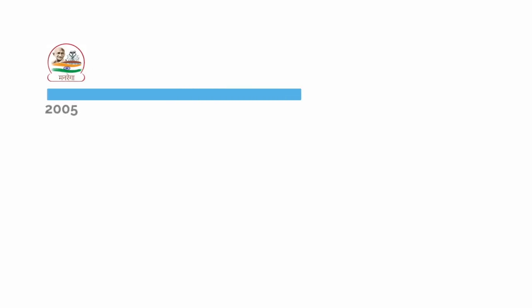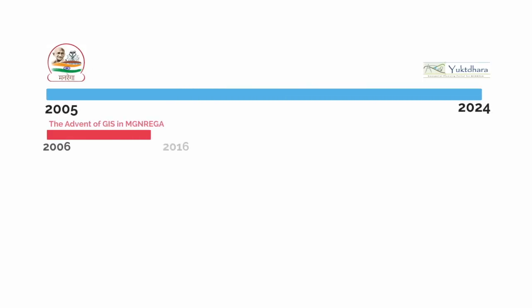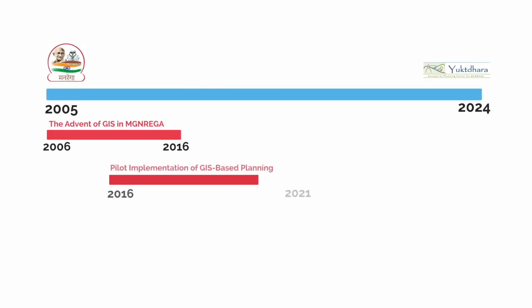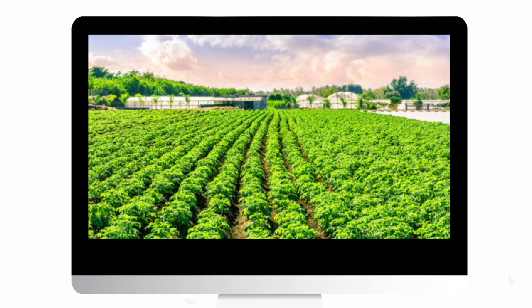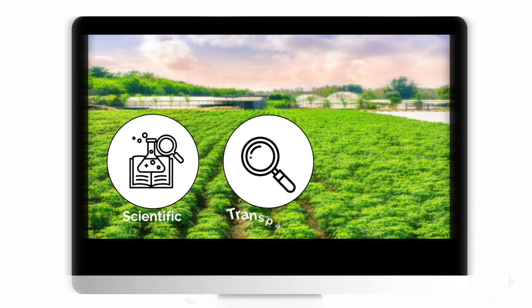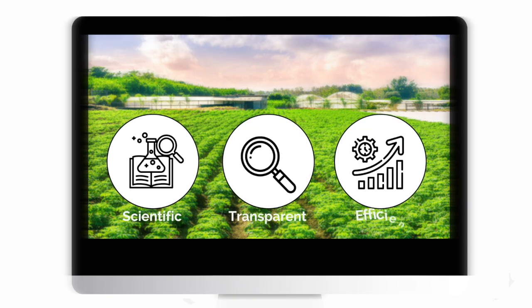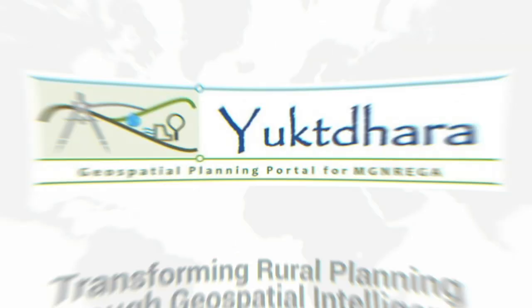From its inception in 2005 to the rollout of Yuktadhara in 2024, the journey of MG NREGA and GIS-based planning has transformed rural asset creation in India. Yuktadhara is not just a portal — it is a vision for the future, a step towards scientific, transparent, and efficient rural planning.